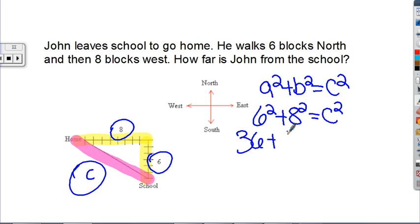6 squared is 36. 8 squared is 64. 36 plus 64 equals 100. So 100 equals c squared.